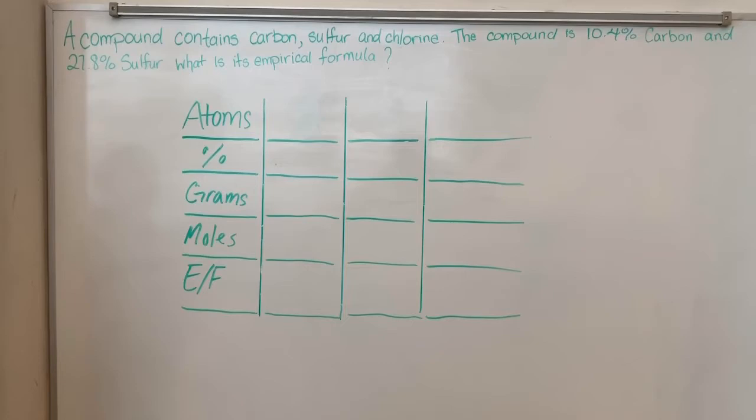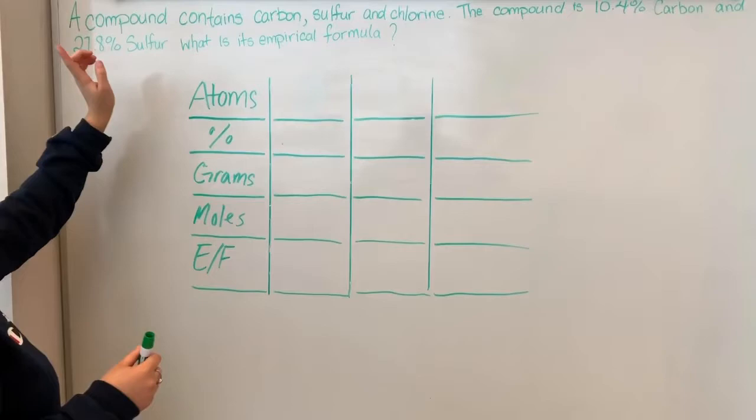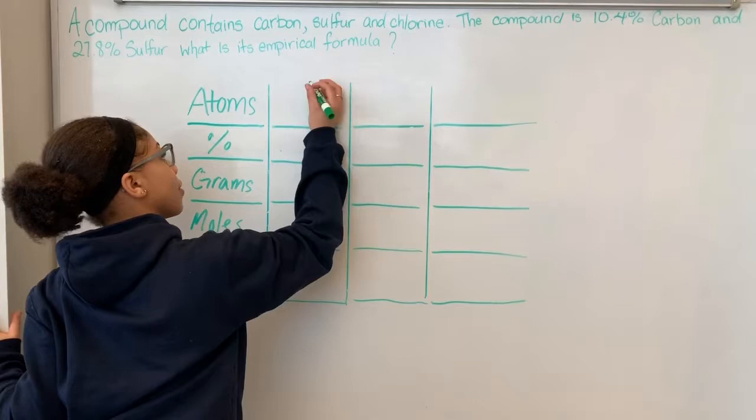So here we're given three atoms: carbon, sulfur, and chlorine. We only know carbon is 10.4% and sulfur is 27.8%, so we need to find the percentage of chlorine.